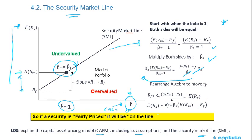Rearranging gives us the CAPM equation: the expected return of the stock equals the risk-free rate plus beta times the expected return of the market minus the risk-free rate, which is the market risk premium.